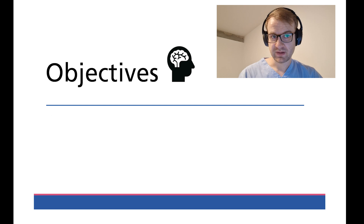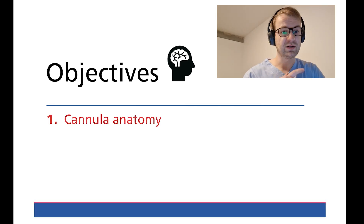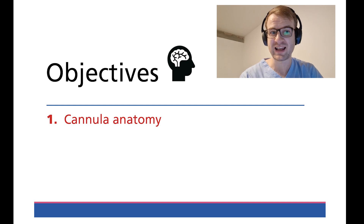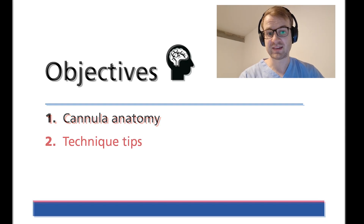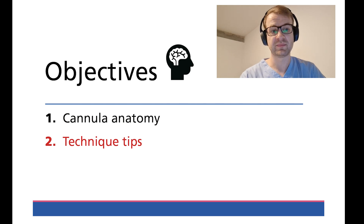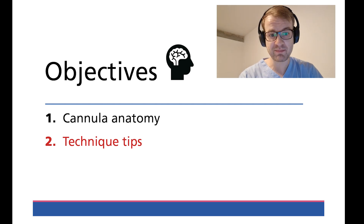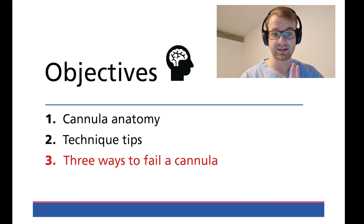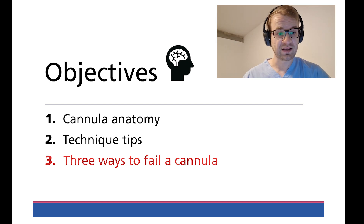Which brings me to the objectives. Firstly, I'll cover the anatomy of the cannula, including the different variations you may encounter in clinical practice, how they may be relevant to your technique, and what the different flashbacks indicate. Secondly, I will take you through some technique tips, including how and why to maintain skin tension, the importance of insertion angle, and in my opinion the optimal way to grip a cannula. Thirdly, I'll cover the only three ways I believe it's possible to fail a cannula and how they can be avoided.